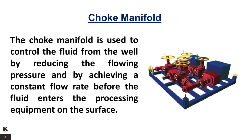The choke manifold is used to control the fluid from the well by reducing the flowing pressure and by achieving a constant flow rate before the fluid enters the processing equipment on the surface. When testing a well, the aim is to impose critical flow across the choke. When critical flow is achieved, changes in pressure and flow rate made downstream from the choke do not affect downhole pressure and flow rate.